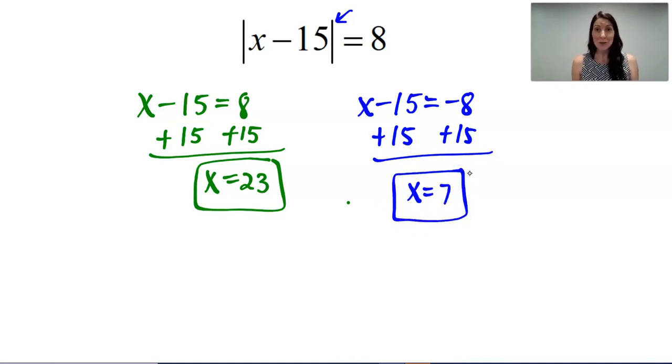Now, in fact, both of these answers are correct. And you can always double check by checking your work. So if I plugged in 23 for x, 23 minus 15 is 8. The absolute value of 8 is equal to positive 8. Or if I plugged in 7, 7 minus 15 is negative 8. The absolute value of negative 8 is positive 8. So they both work, which is fantastic.